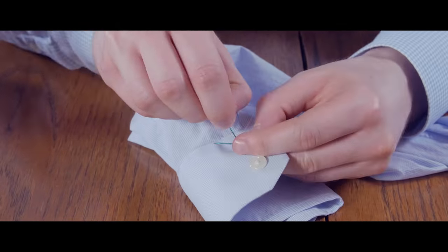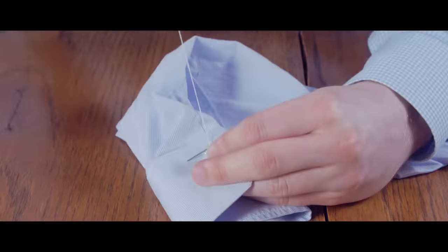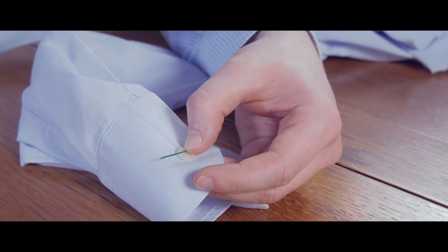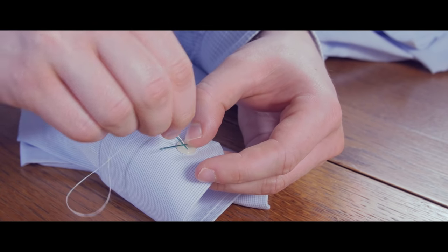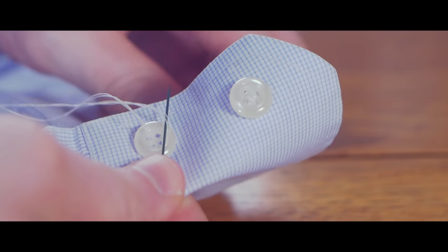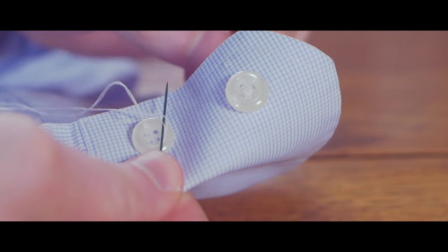Now let's sew on the button. You're going to use the exact same pattern that you used to form the X. Pass through the back of the fabric going through the first buttonhole. Pass over the second needle and go through the second buttonhole.